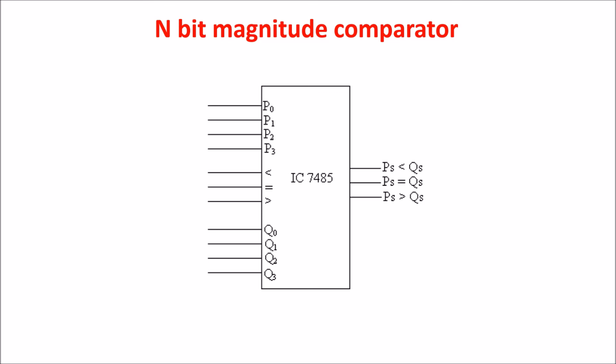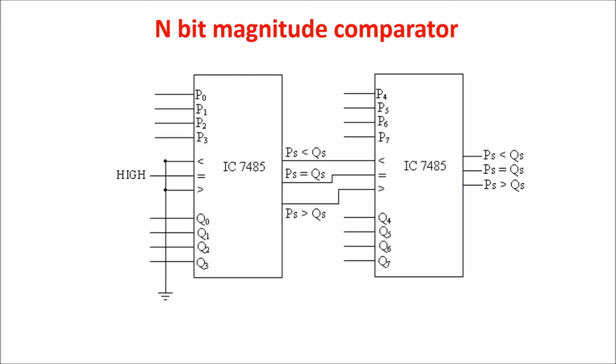For example, an 8-bit comparator is obtained connecting the two blocks in this way. You see, the second comparator takes the previous situation from the first comparator.